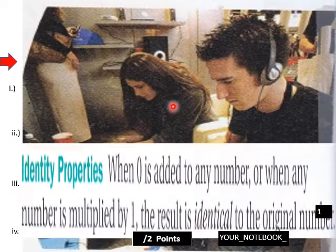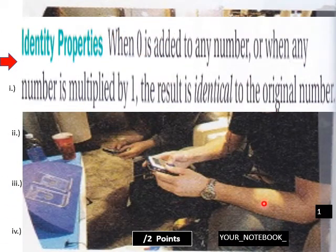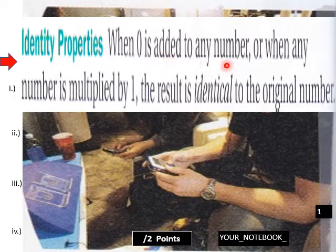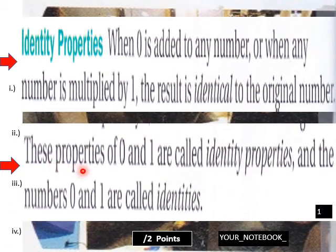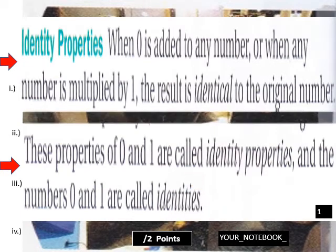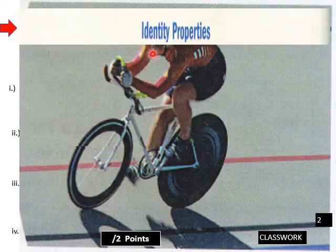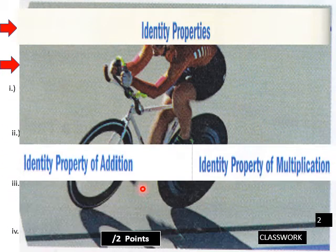Let's go into page one of Part Two today of 2.1. This goes into your notebook — page one, 2.1 Part Two: Identity Properties. When zero is added to any number, or when any number is multiplied by one, the result is identical to the original number. These properties of zero and one are called identity properties, and zero and one are called identities.